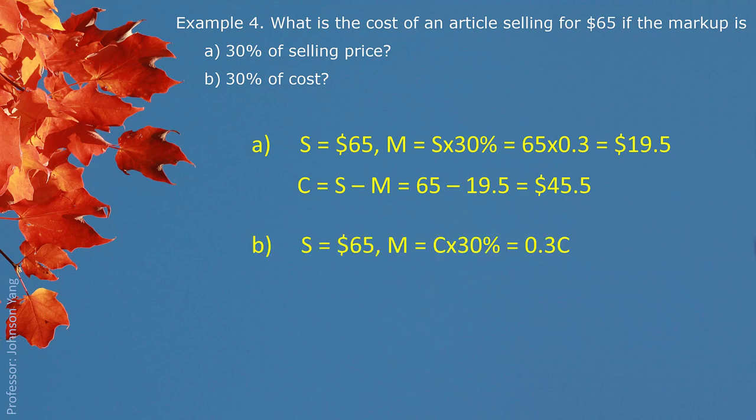In part B, same selling price $65 but markup is 30% of the cost. We do not know the cost yet at this moment, so we just simply label it 0.3C. We know selling price minus markup gives us C. So here is the equation: selling price equals cost plus markup. So 65 equals C plus 0.3C gives us 1.3C. In that case, we build up the equation and solve this equation. Turned out cost of buying is $50 for part B.